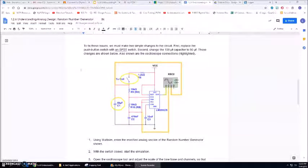First we're going to replace the push button with a single pull single throw switch so that's indicated right here and then we're going to change the 100 microfarad capacitor to a 50 microfarad. And that would be right here. So and then the oscilloscope connections are highlighted here. So this is what you're actually going to be using in multi-sim.